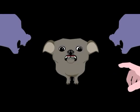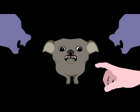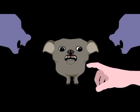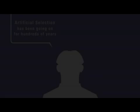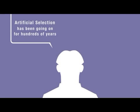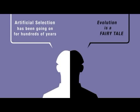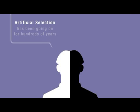Breed only from horses with good competition records, and their offspring will tend to perform well also. Breed only from aggressive dogs, and their offspring will tend to be aggressive. Many who happily acknowledge this kind of artificial selection are the same people who label evolution impossible or a fairy tale.